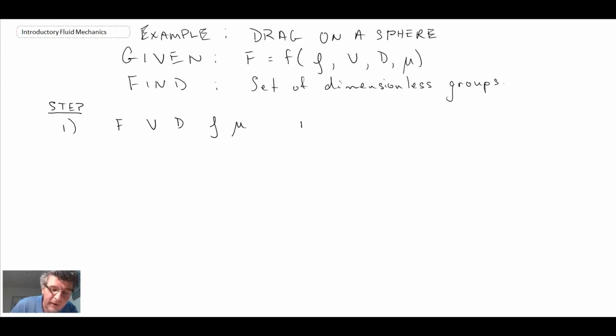Let's go step by step. Those are the parameters. We see n equals 5, the number of parameters for the problem we're investigating. The primary dimensions for this problem, we don't have temperature so we don't have to worry about theta. All we have is mass, length, and time, so with that we have three primary dimensions.